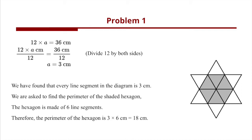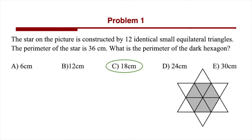We are asked to find the perimeter of the shaded hexagon. The hexagon is made of 6 line segments. Therefore, the perimeter of the hexagon equals 3 times 6, or 18 centimeters. Going back to the original problem, we see that 18 centimeters is choice C, and we're done.